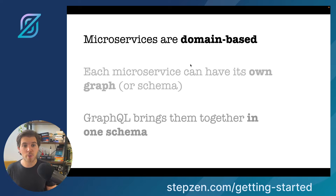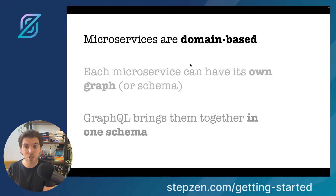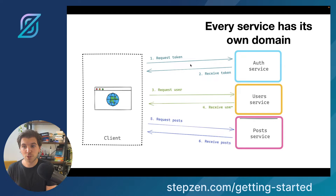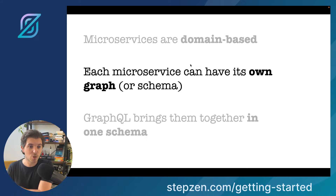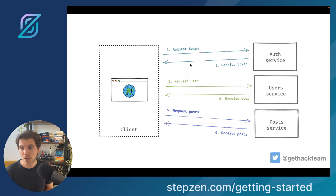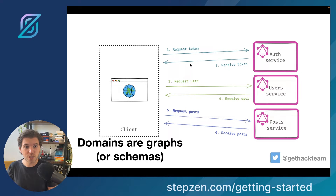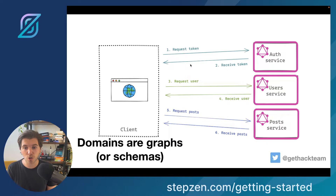Because microservices are domain-based, meaning that if you have a service setup where every service has its own domain, every service can have its own graph. Because we have these domains, we can change them to be a graph instead. So you have this setup: an authentication service, a user service, a post service. If you convert this to GraphQL, we make sure we have a graph for every single microservice — your authentication service, your user service, your post service — they will only have their own graph.